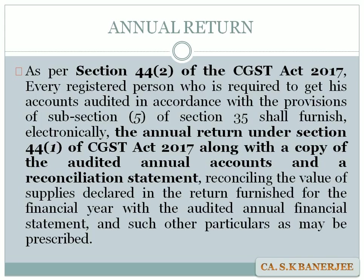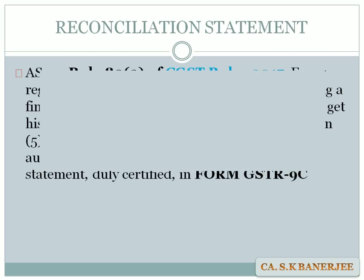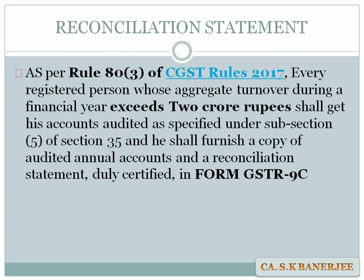The government gets an idea about whether you have stated correct facts in your GST returns by comparing with your annual financial statements. A reconciliation statement is required to see if there are any mismatches and the reasons for such differences. Rule 80 of CGST Rules 2017 states that every registered person whose aggregate turnover exceeds 2 crore rupees shall furnish a copy of audited annual accounts and a reconciliation statement certified in Form GSTR-9C.